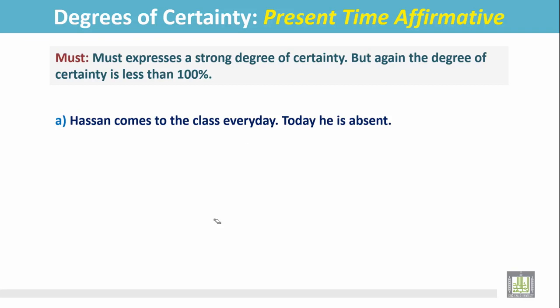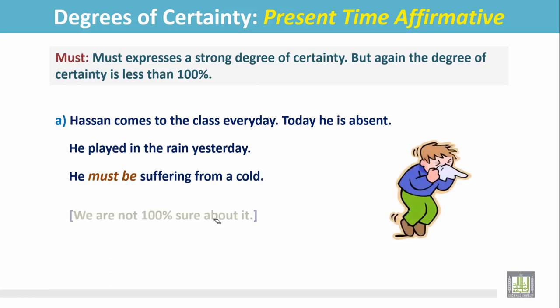Today he is absent. He played in the rain yesterday, so he must be suffering from a cold. We are not 100% sure about it - it is just a guess. As he played yesterday in the rain, he might have a cold, and the degrees of certainty is less than 100%.